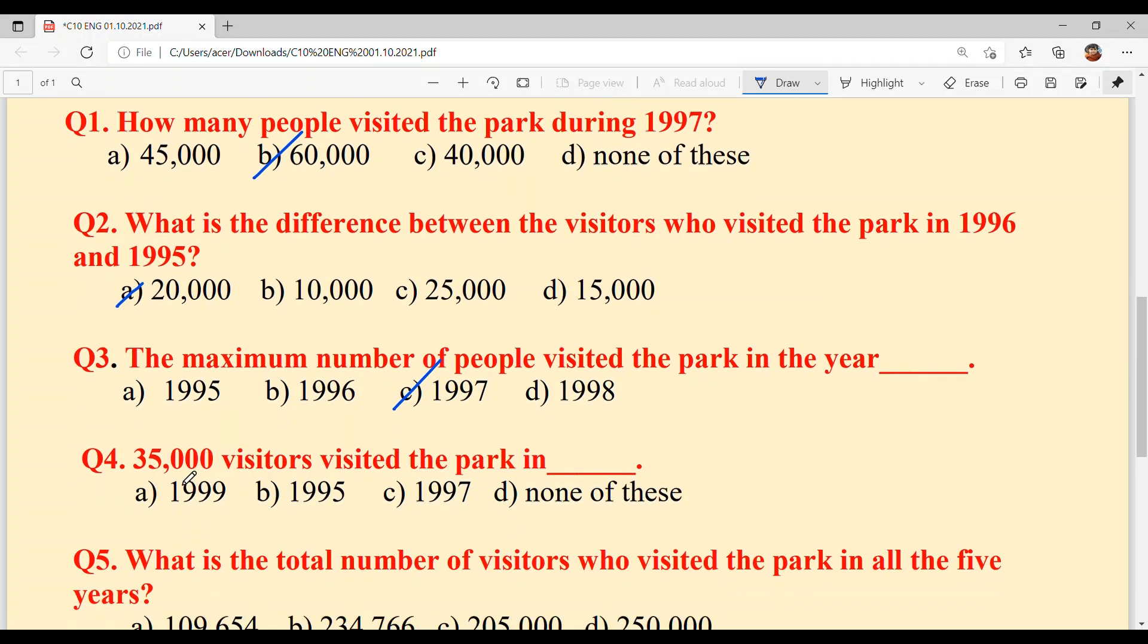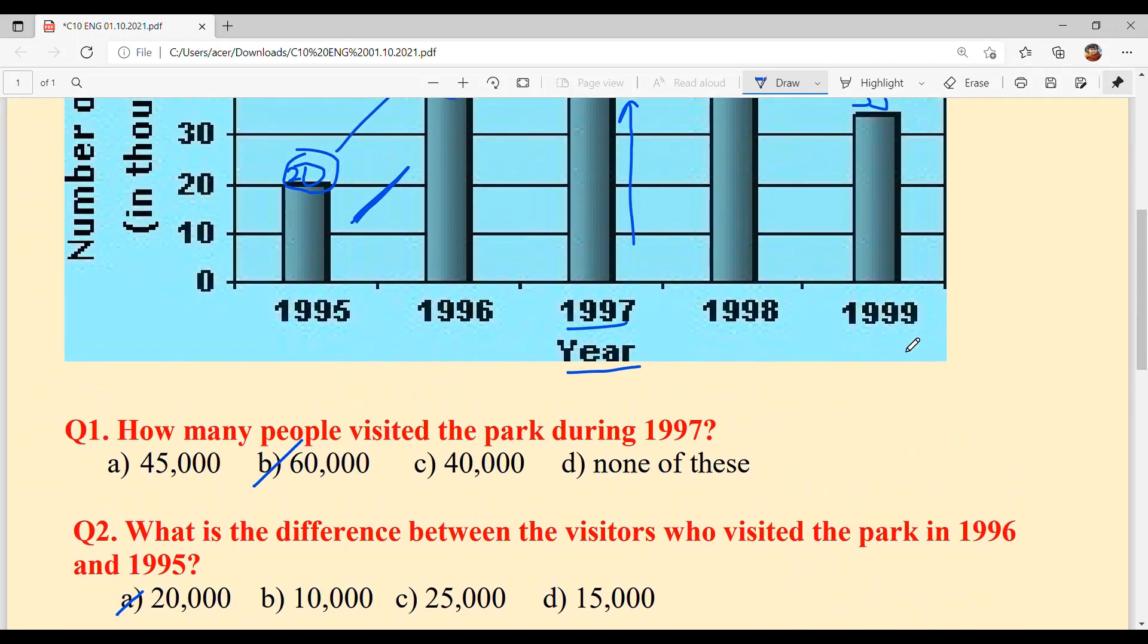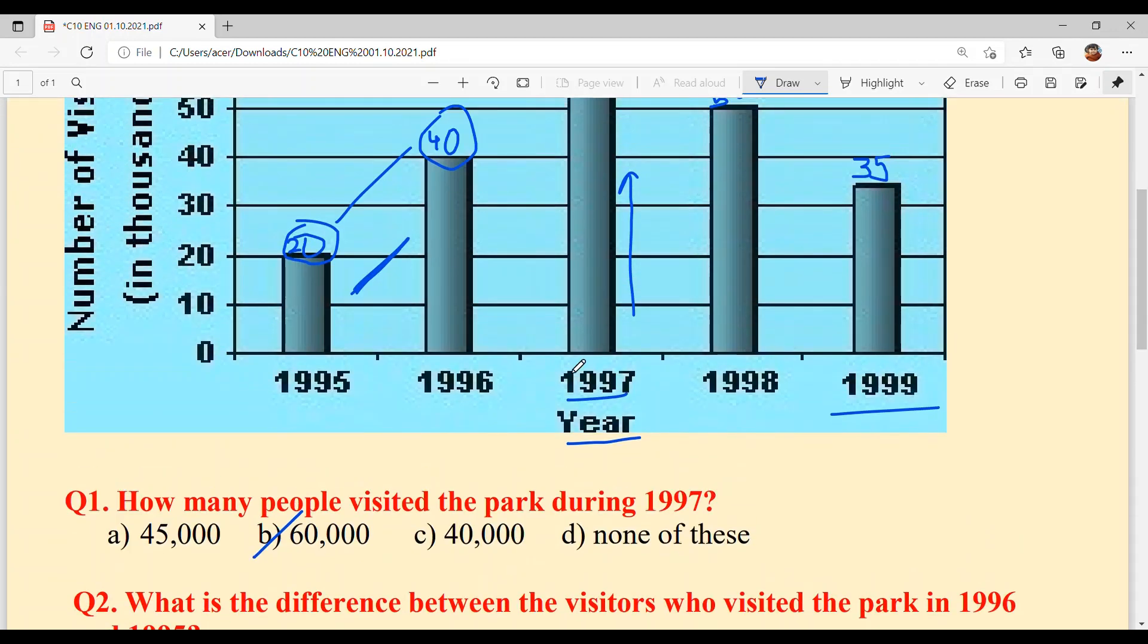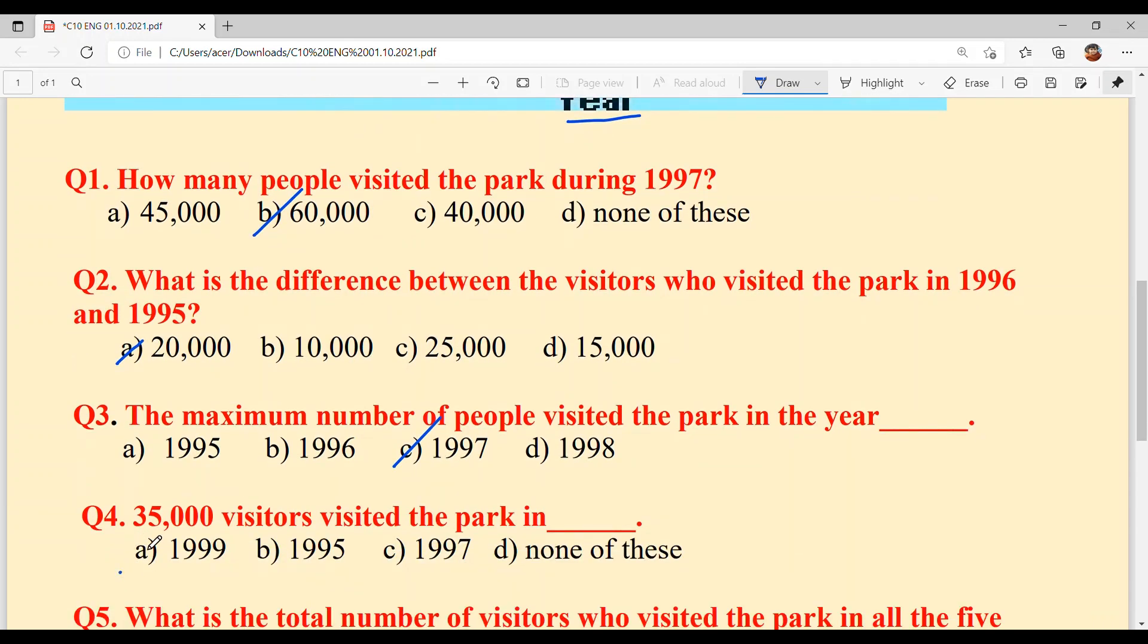Question 4: 35,000 visitors visited the park in? Now, when did 35,000 people visit? 1999. Option A is your answer.